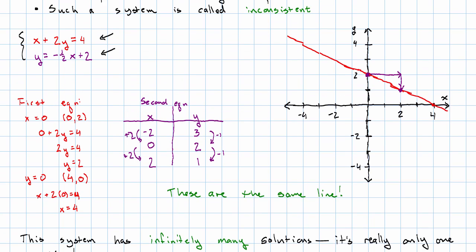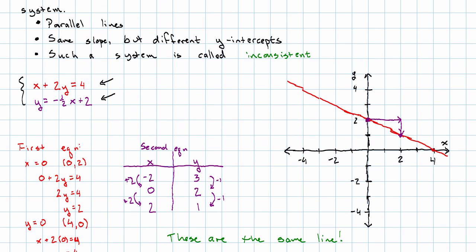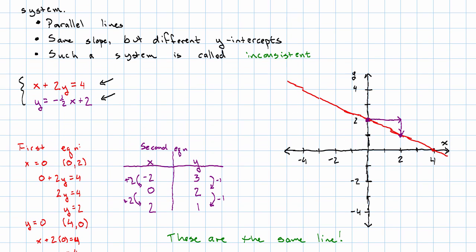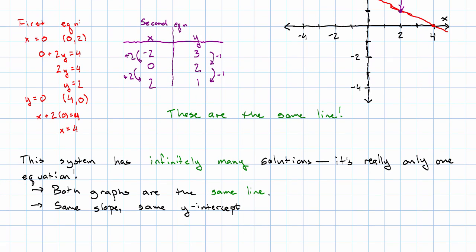When they were parallel they had the same slope but different y intercepts. Here they have the same slope and the same y intercept. We call a system like this consistent dependent. Consistent because both equations can be true at the same time, but dependent because whether or not the second equation is true depends on whether the first equation is true.